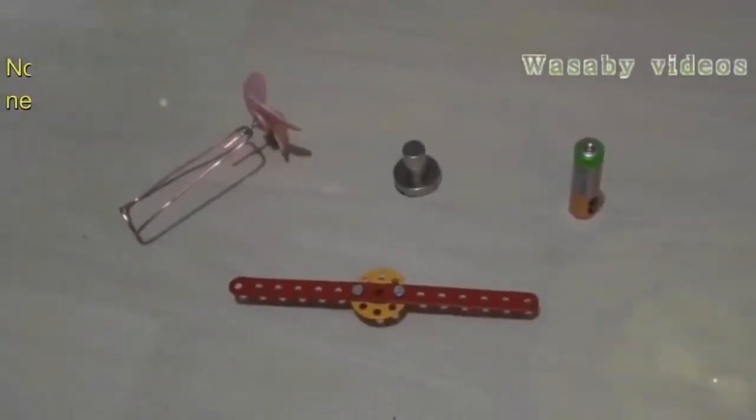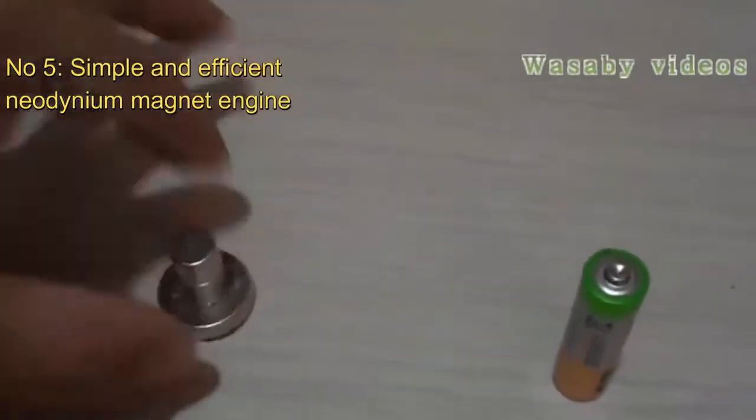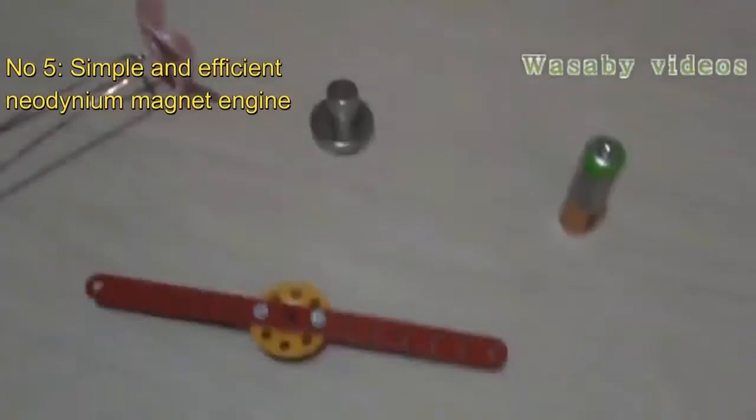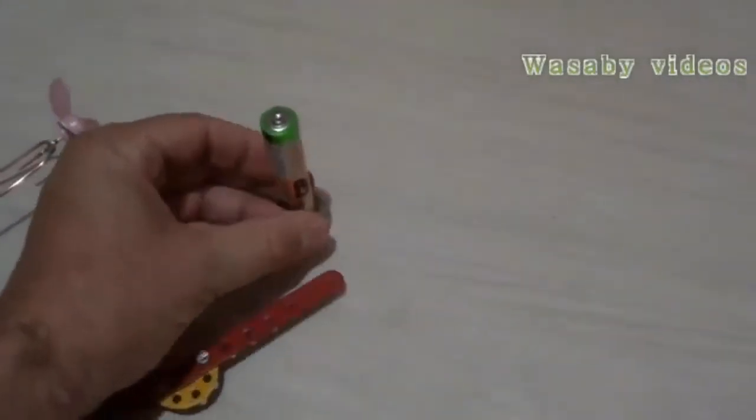I will use for the presentation a simple battery, a neodymium magnet. It is very important that the magnet is neodymium so that it is operating well. A copper wire and two sort of screws, a plastic screw and an iron screw. Let's start to make the presentation first with the plastic screw.